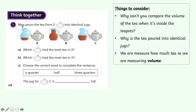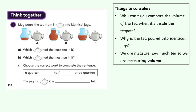Let's have a look at question one. Meg pours the tea from three teapots into identical jugs. Here are the teapots A, B and C, and she's poured the tea into these jugs — all the same. We're asked: which teapot has the least tea in it? Which teapot has the most tea? And to finish the sentence: the jug for teapot C is how full — a quarter, half, or three quarters? Here we're measuring the volume of the tea — how much stuff, what amount of tea we've got in each teapot. Why can't you compare the volume of the tea when it's inside the teapots? Why do we have to pour the tea into identical jugs? Have a go at parts A, B, and C, then we'll talk about these answers. Click pause here.